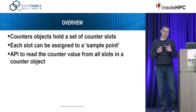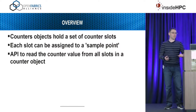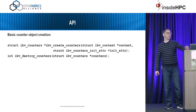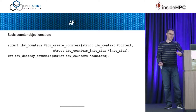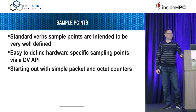The API is reasonably straightforward. We have this concept of a counter object — that's where your number is stored. A counter object has a number of slots, and you can direct each slot to sample a particular thing, which we call a sample point. There's a simple API to give you all the values from the counters in your counter object. The creation is the standard verbs thing: you give it a context, an init struct, and it gives you a verbs object. The init struct in the proposal is currently empty because there are no attributes; they dynamically size depending on how many sample points you attach.